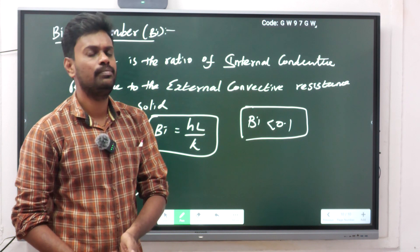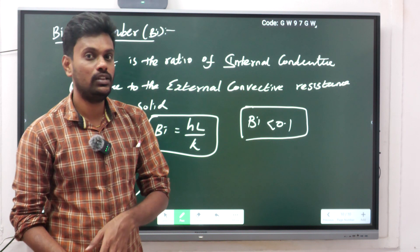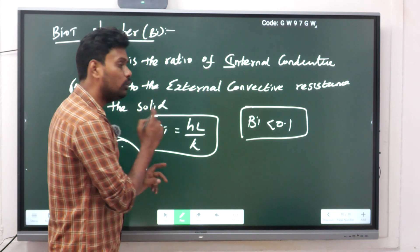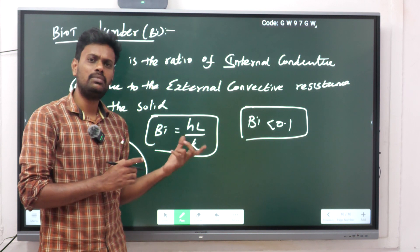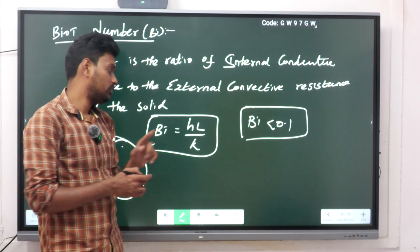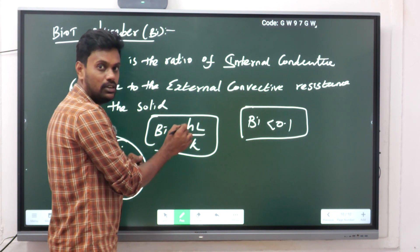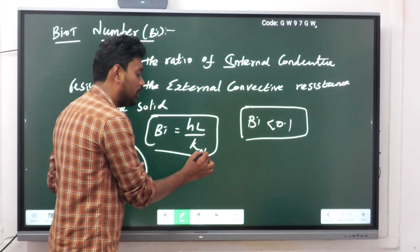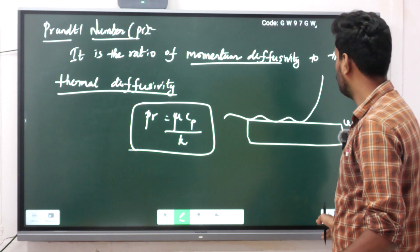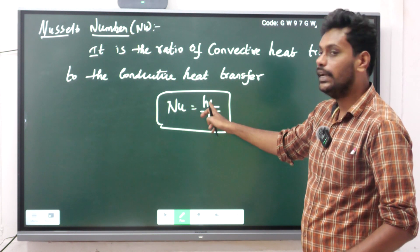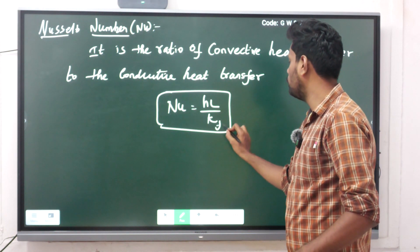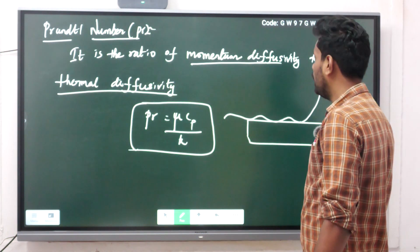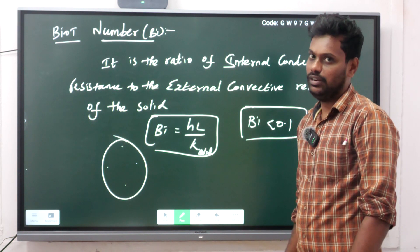The Biot number formula is Bi = h·l / k, where h is the heat transfer coefficient, l is the length of the object, and k is the thermal conductivity of the solid. Note that the Nusselt number has the same formula, but for Nusselt number k is the thermal conductivity of the fluid, whereas for the Biot number k is the thermal conductivity of the solid. This is the key difference between the two.